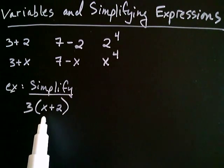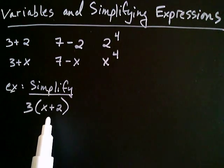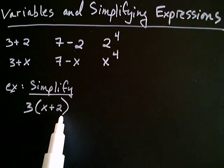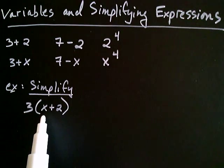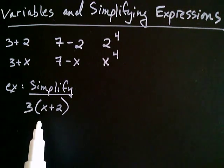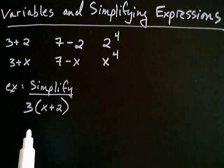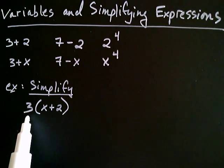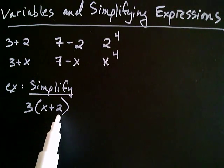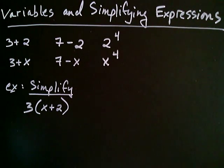GEMDAS says do what's inside the parentheses first — the grouping symbols. But how can I add x to two if I don't know what the value of x is? It turns out that there's a property in algebra that we can use to simplify the situation. Here's what we're allowed to do: we can take this three and we can multiply it by the x and then multiply it by the two. This property is called the distributive property.